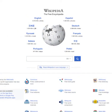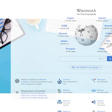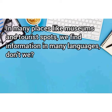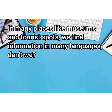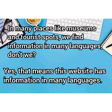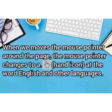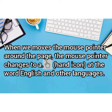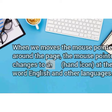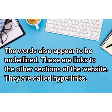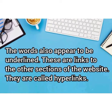As you can see, there is no specific information here right away — it's just showing us the names of languages like English, Chinese, etc. Just as in museums and tourist spots we find information in many languages, this website has information in many languages. When we move the mouse pointer around the Wikipedia page, the pointer changes to a hand icon at some words, and those words also appear to be underlined. These are links to other sections of the website.